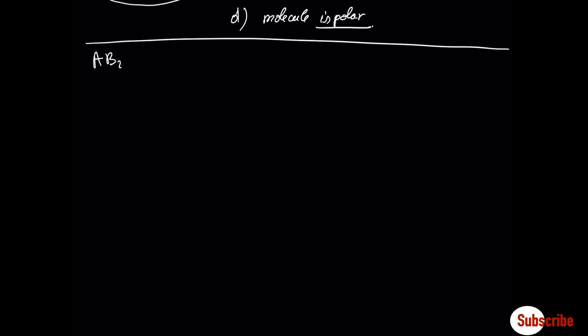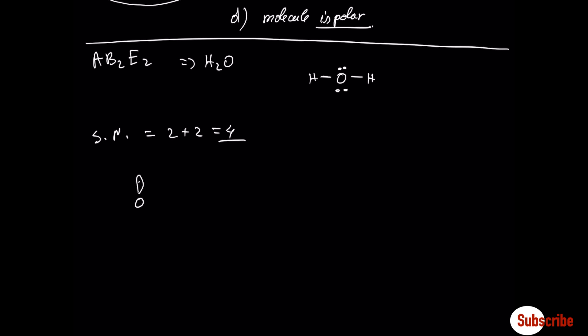Let's move now to AB2E2 — in this case we have 2 lone pairs on the central atom. A typical example is water. The steric number is going to be 2 sigma bonds plus 2 lone pairs, equal to 4. According to VSEPR, it's going to have a V-shape. In terms of electronic geometry it's tetrahedral, with oxygen having one lone pair here and one lone pair here, and the two hydrogens. The angle is 104.5 degrees. The shape is V-shape or angular, and the molecule is polar.